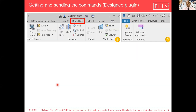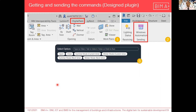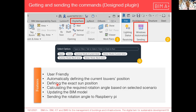Using the Digital Twin tab and pushing the Windows Automation button, we have options and scenarios for opening and closing. In summer mode, the plugin automatically defines the exact sun position based on real-time data, calculates the required rotation angle based on the selected scenario, updates the BIM model, and finally transfers the command to the Raspberry Pi for actuation in the real model.